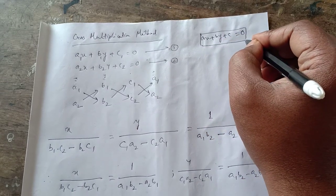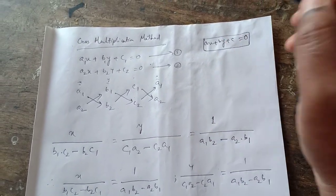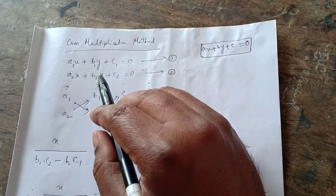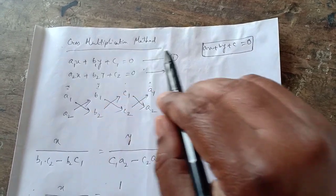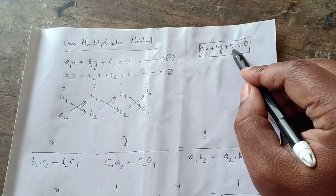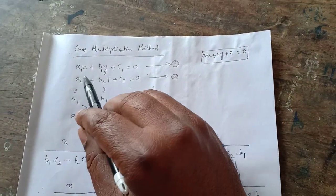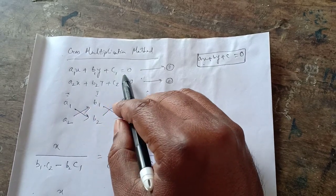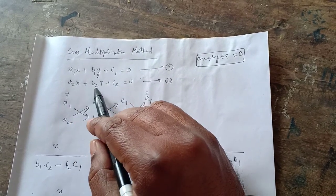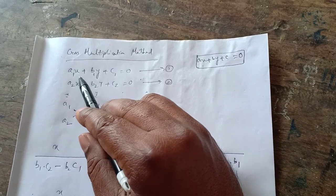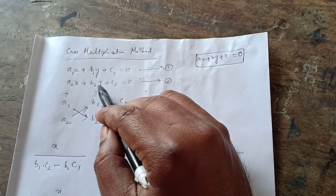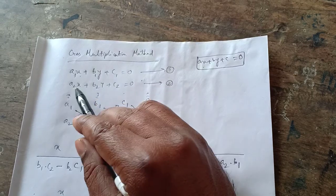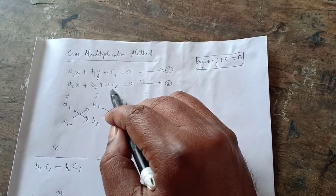To do this method, firstly you have to write all the given equations in the standard form AX plus BY plus C equal to 0. Suppose the equations are A1X plus B1Y plus C1 equal to 0, and A2X plus B2Y plus C2 equal to 0. Here X and Y are the variables and A1, B1, C1, A2, B2, C2 are the constants.